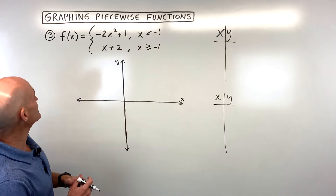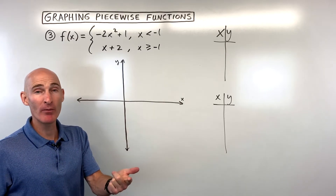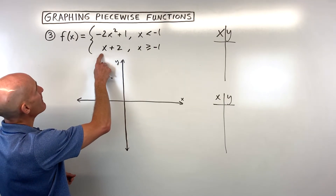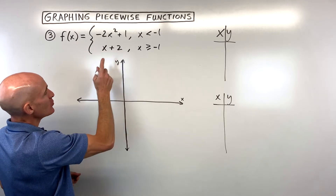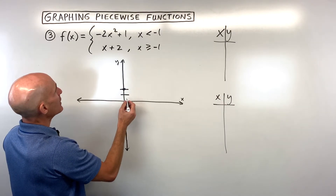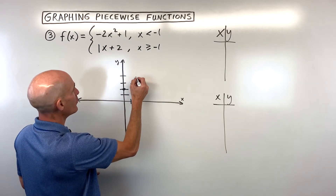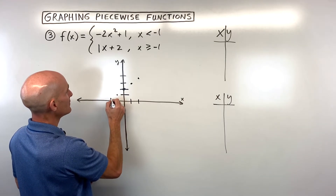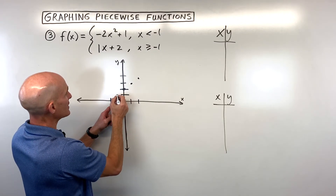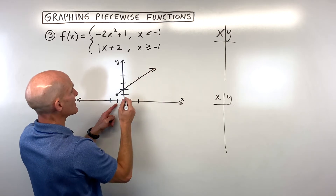For example 3, we can use a hybrid of both methods. For y equals x plus 2, that's a line with a y-intercept of 2 and slope of 1, so rise 1, run 1. We only want where x is greater than or equal to negative 1, so starting at negative 1 with a closed circle and going to the right.